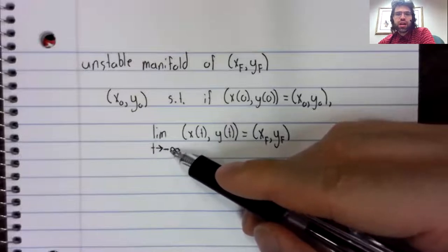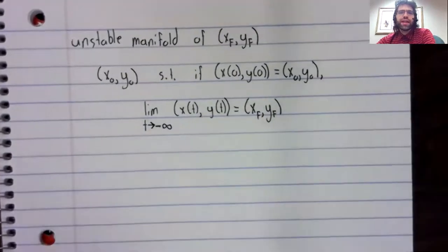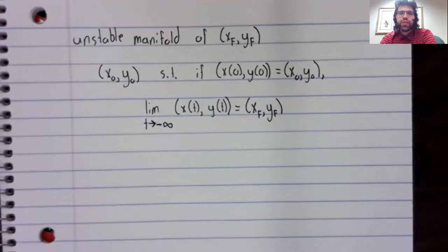Instead of letting time go to infinity, we let time go to negative infinity. So let's look again at a saddle.